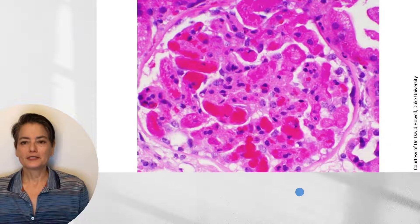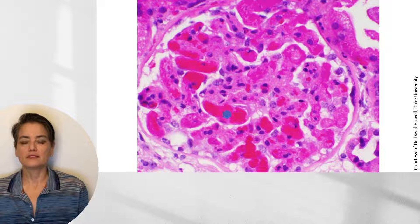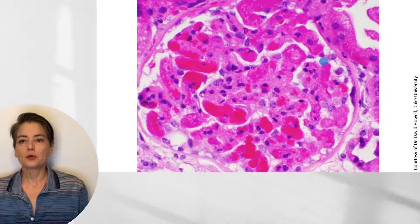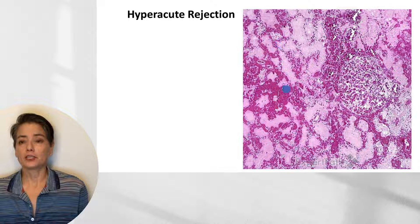Looking at a histologic section of a glomerulus from hyperacute rejection in the kidney, the capillaries — instead of having discrete red cells flowing through — are glommed shut with dissolution of red cells and deposition of fibrin thrombi, visible as light pink amorphous material, along with scattered neutrophils. This organ is in the process of acutely dying, and over time we get hemorrhagic necrosis of the entire organ with loss of nuclei.